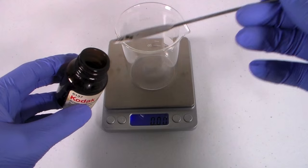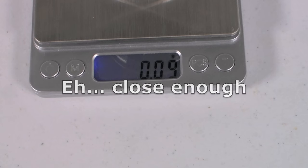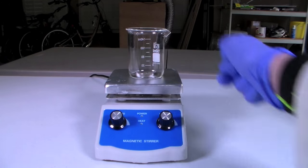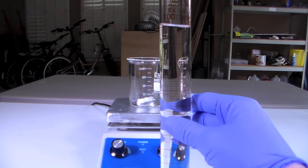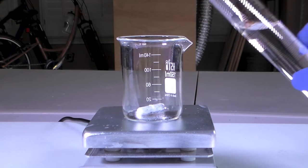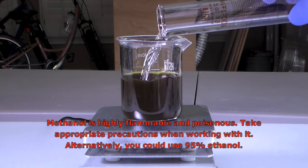Start by measuring out 0.1 grams of bromophenol blue in a beaker. Then place this beaker on a stir plate and add a magnetic stir bar. Measure out 100 milliliters of methanol and add it to the beaker. You will need to stir for a few minutes to get everything to dissolve.